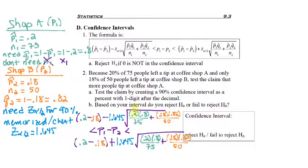The square root of 0.2 times 0.8, divided by 75, plus 0.18 times 0.82, divided by 50. So the whole thing without any single parentheses, negative 0.097 to 0.137.